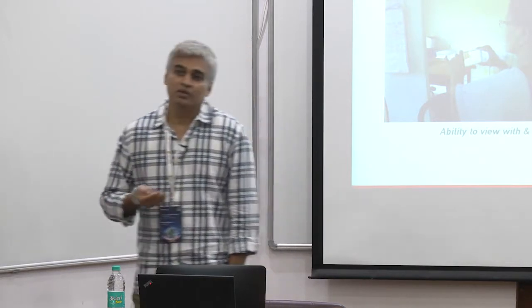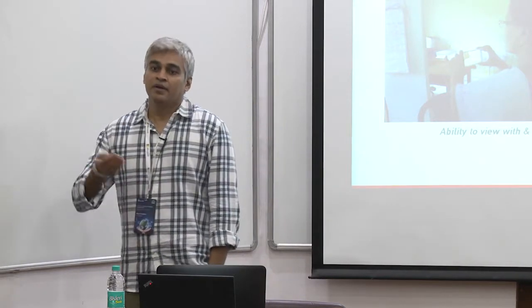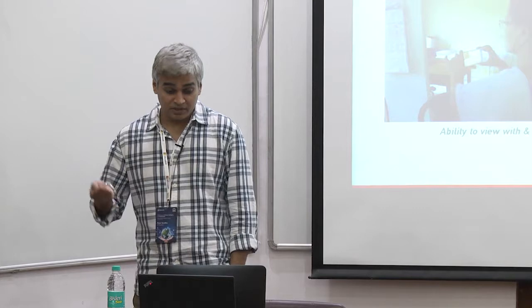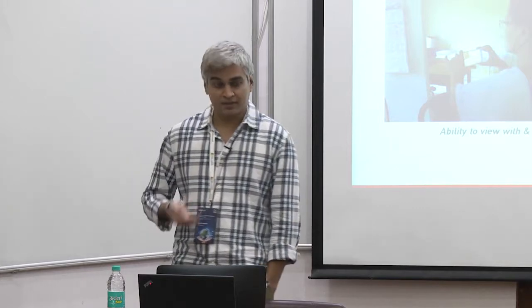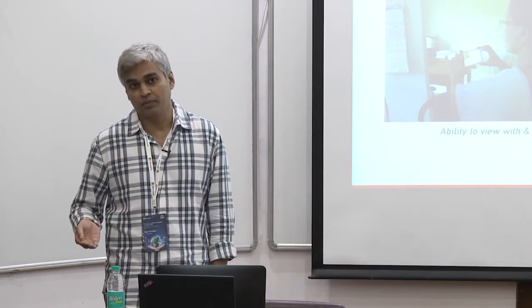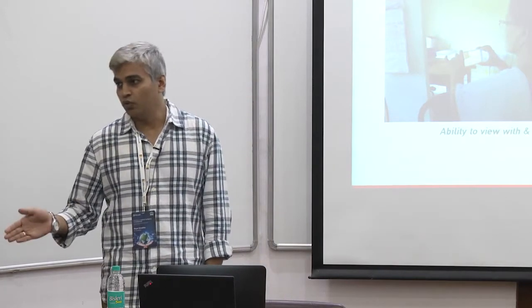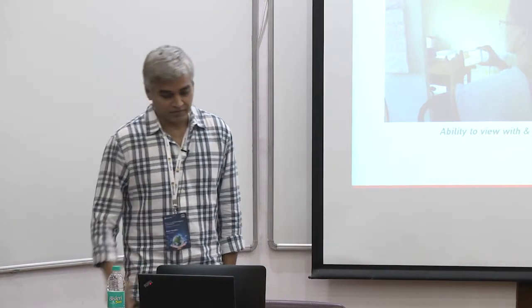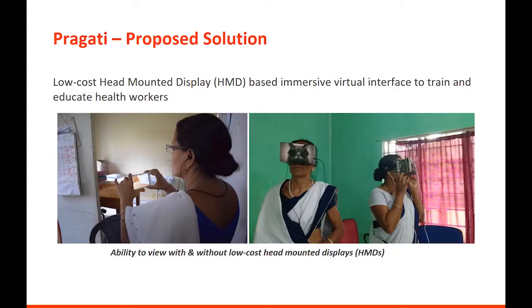So can a mobile phone become a third person, where information related to sex and so on could be communicated to rural communities through these mobile interventions? It also works when health workers are at home — they can learn themselves sitting at home.